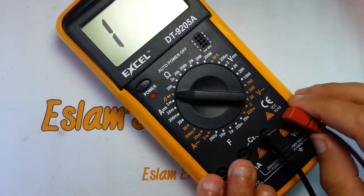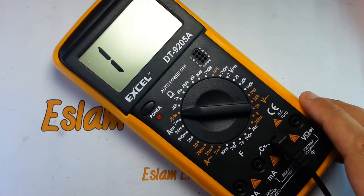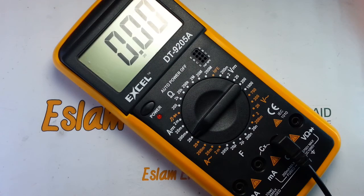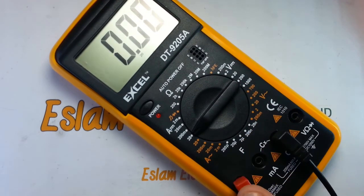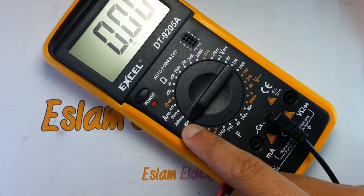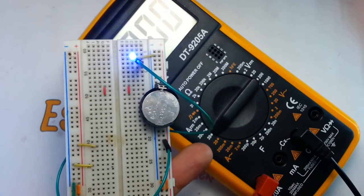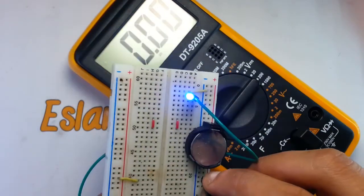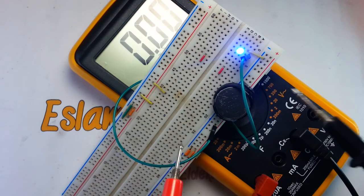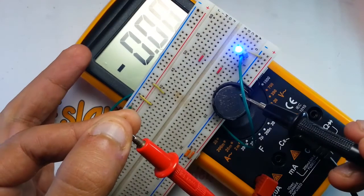Now I want to measure current. Move the cursor to the highest value as long as you don't know what the value of current is that you are going to measure, then connect the red wire to the 20 amps connector. Here is the circuit, and for sure this circuit is not draining even one ampere. It's working right now. When I'm going to measure the current, it's not possible to do this while the circuit is closed.